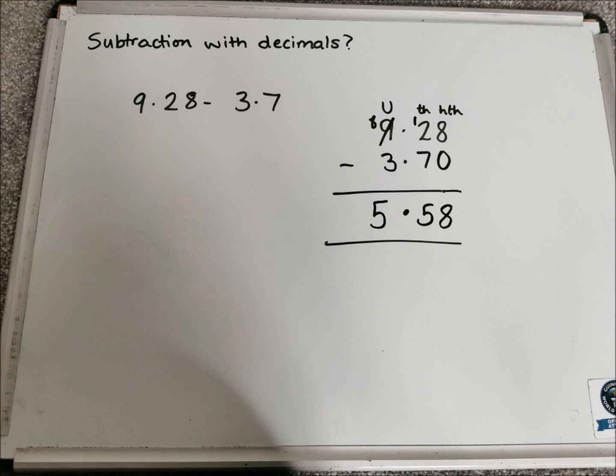Add in the decimal point and finish off with your units. So 8, take away 3, which is 5. So the answer is 5.58.